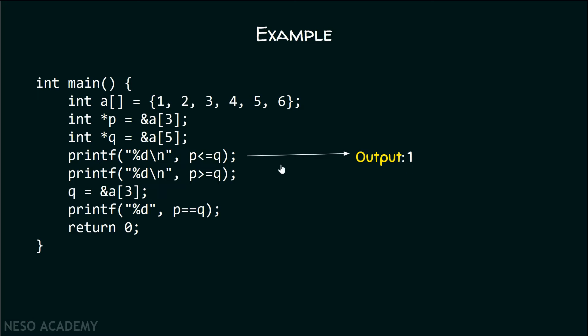Whenever we do a comparison, it will return output either as one or zero. In this case, P is less than Q which is correct, therefore the output is one.